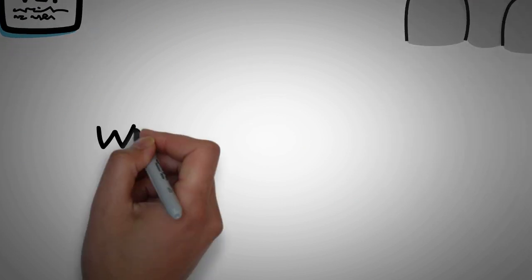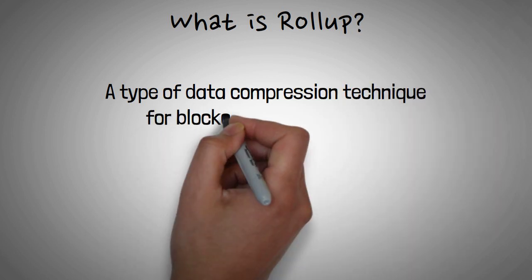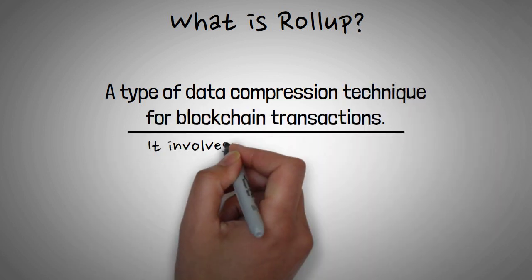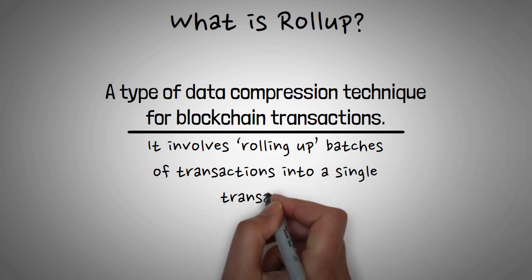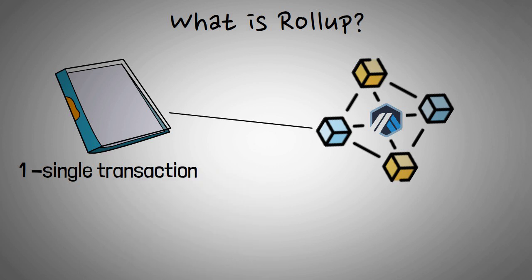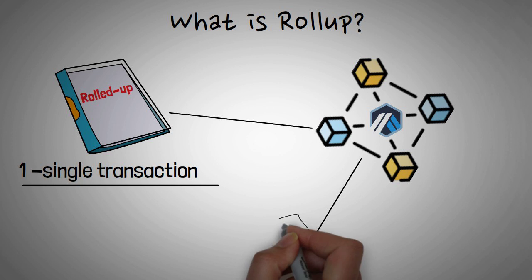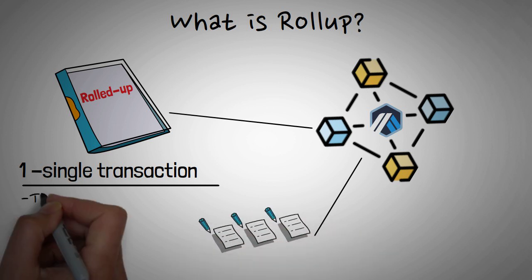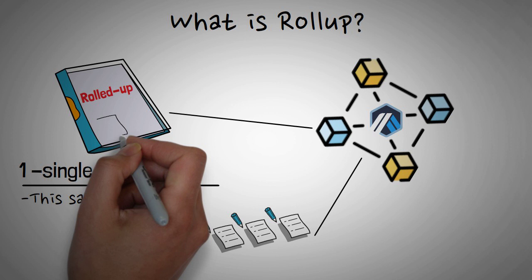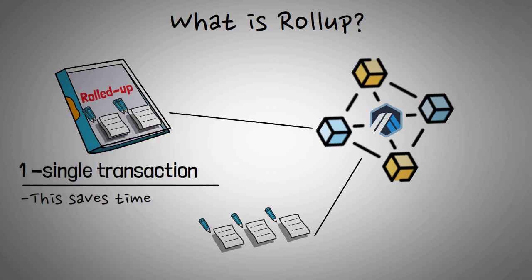But wait, what is a rollup? A rollup is a type of data compression technique for blockchain transactions. It involves rolling up transactions into a single transaction. The benefit of this is that a blockchain only needs to process a single transaction — the rolled-up one — instead of confirming each individual transaction contained within the rollup. This saves time, since multiple transactions are confirmed at once. And in return, this saves money, since the blockchain only has to confirm the one transaction.